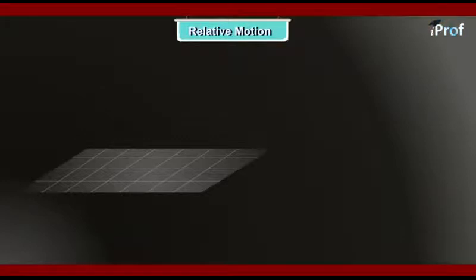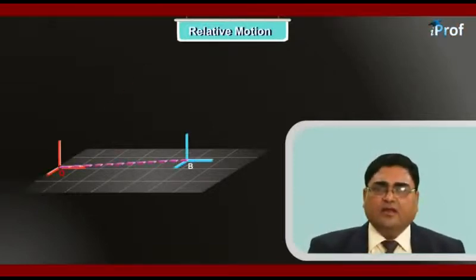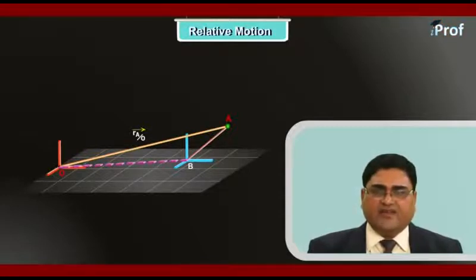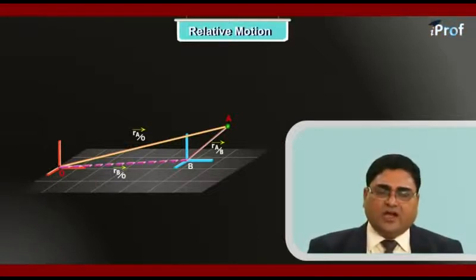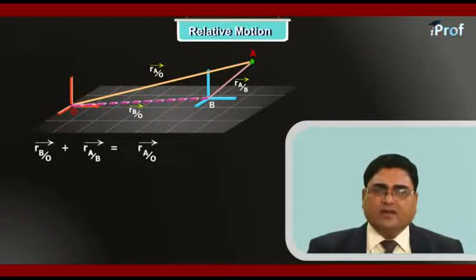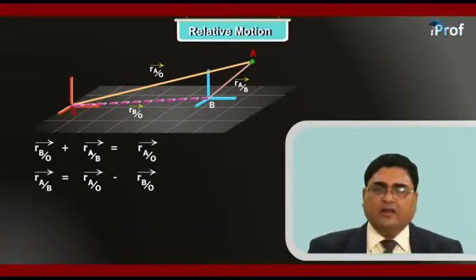Now let's analyze the concept of relative motion mathematically. Suppose there are two reference frames O and B, and an object A is moving as shown in the figure. The position vector of A in reference frame O is RAO vector, the position vector of B in reference frame O is RBO vector, and the position vector of A in reference frame B is RAB vector. Applying the triangle law of vector addition, we get RBO + RAB = RAO, which gives us RAB = RAO minus RBO.